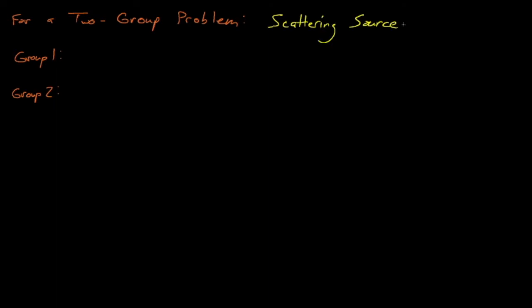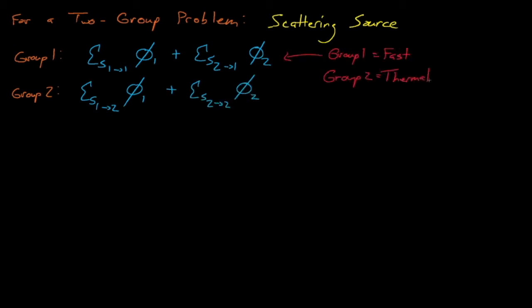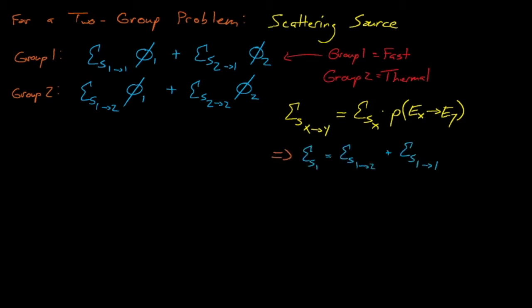Let's consider the scattering source for a two-group problem, where group 1 corresponds to the fast group and group 2 corresponds to the thermal group. Group 1 usually corresponds to the group with the highest energy. The scattering source for group 1, or the rate at which neutrons scatter from all other groups into group 1, is equal to the group 1-to-1 scattering cross-section times the group 1 flux, plus the group 2-to-1 scattering cross-section times the group 2 flux. Note that this group x-to-y scattering cross-section is equal to the scattering cross-section for group x times the probability that a group x neutron undergoing scattering will scatter from group x to group y.